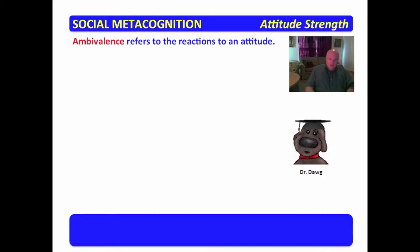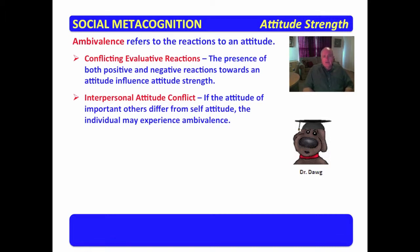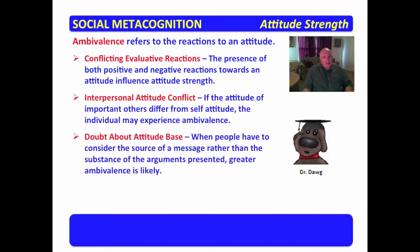Ambivalence refers to the reactions to an attitude, either positive or negative. Conflict in evaluative reactions — the presence of both positive and negative reactions towards an attitude — influences attitude strength. If I'm in an environment where there's a lot of conflict about the attitude, I am more likely to take a position and give strength to my stance. In interpersonal attitude conflict, if an attitude important to others differs from one's own, the individual can experience ambivalence — and if my attitude differs from others, it's going to affect the strength of my attitude.